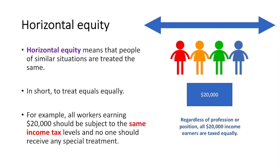Horizontal equity means that people of similar situations are treated the same — in short, to treat equals equally. For example, all workers earning $20,000 should be subject to the same income tax levels and no one should receive any special treatment.